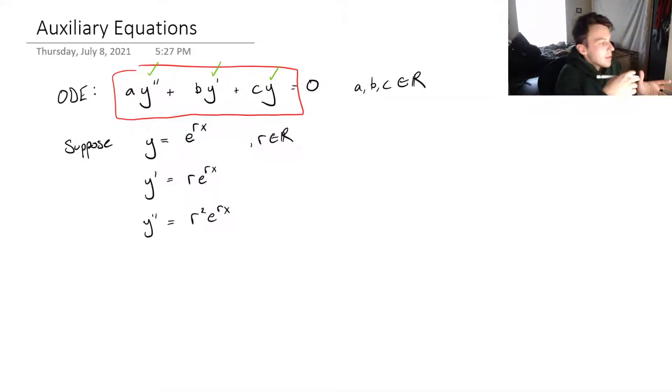So let's see what happens when we substitute what we assume our solutions are back into the differential equation. Because now, we would only have an equation in terms of r. And that's what we want to know, right? So our ODE becomes a times r squared e to the rx plus b times r e to the rx plus c times e to the rx, and this is equal to zero.